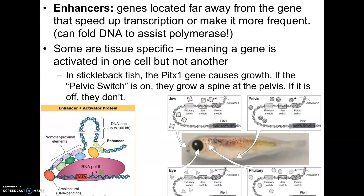We also have these things called enhancers, which are genes in other locations. This diagram shows how an enhancer works: it actually causes the DNA to fold up so that RNA polymerase — the enzyme that binds so that mRNA can be made — can access the gene. Notice how the DNA has to fold up with these special proteins with this enhancer sequence. If that doesn't fold up properly, RNA polymerase can't bind, and those genes may not get copied.